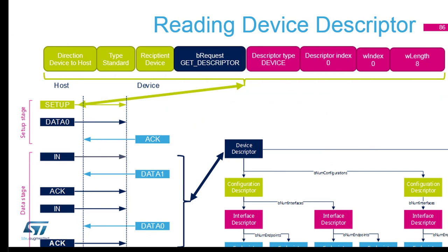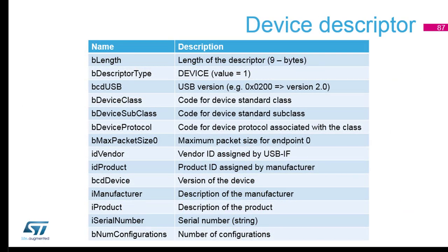Reading the device descriptor — first the setup transaction, and we receive structured information. What is important: you see the number of configurations, you can see it's a device, the vendor ID, and the product ID. From the host point of view, this is how it knows what driver to load. The product ID and vendor ID are really important. The vendor ID is paid — you have to pay to get one from usb.org if you want your company's own. For the product ID, ST can provide one for free if you send us information, but you will have to use our vendor ID, and that allows you to put the USB logo on your device if you want to sell it on the market.